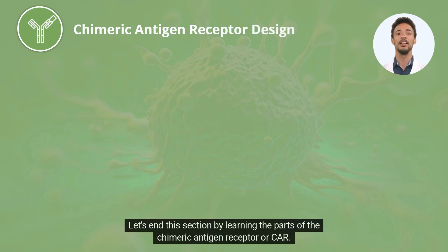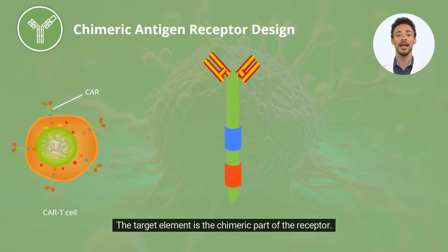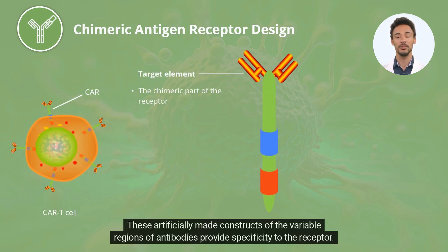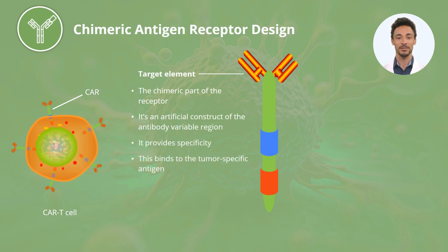Let's end this section by learning the parts of the chimeric antigen receptor, or CAR. The target element is the chimeric part of the receptor. These artificially made constructs of the variable regions of antibodies provide specificity to the receptor. In the case of cancer, the target element would bind to the tumor-specific antigen.